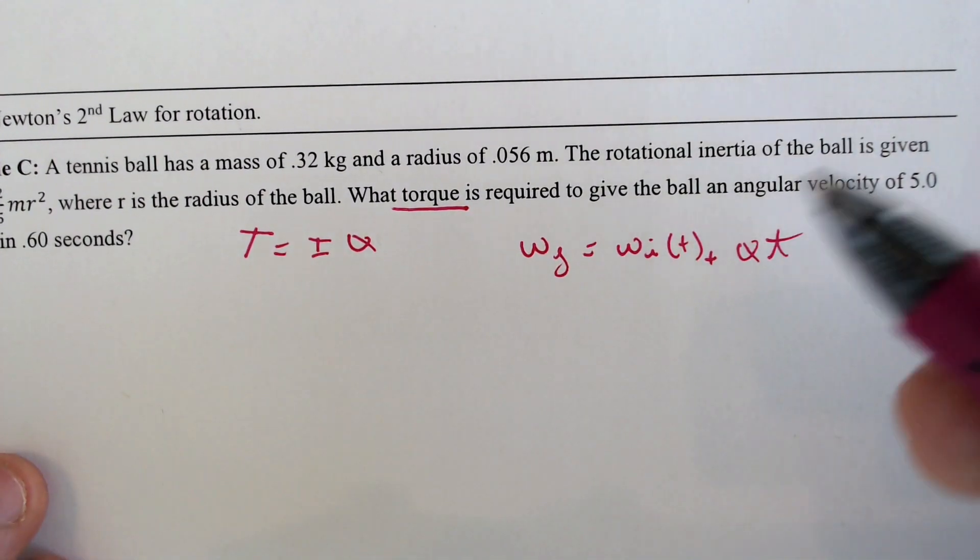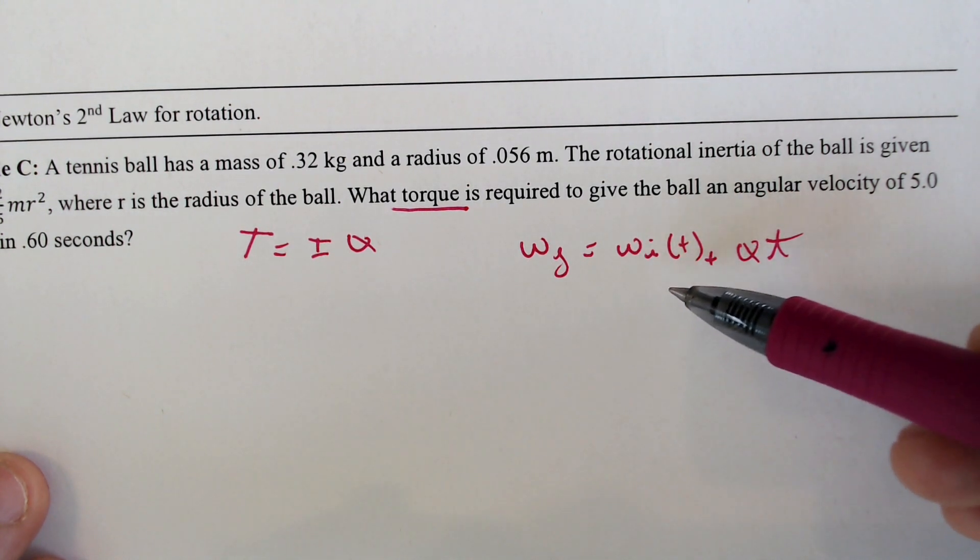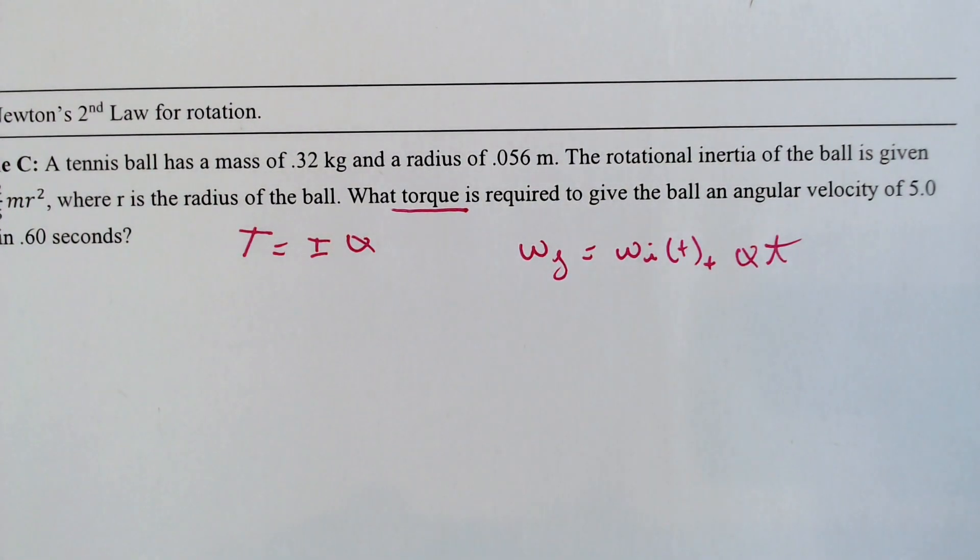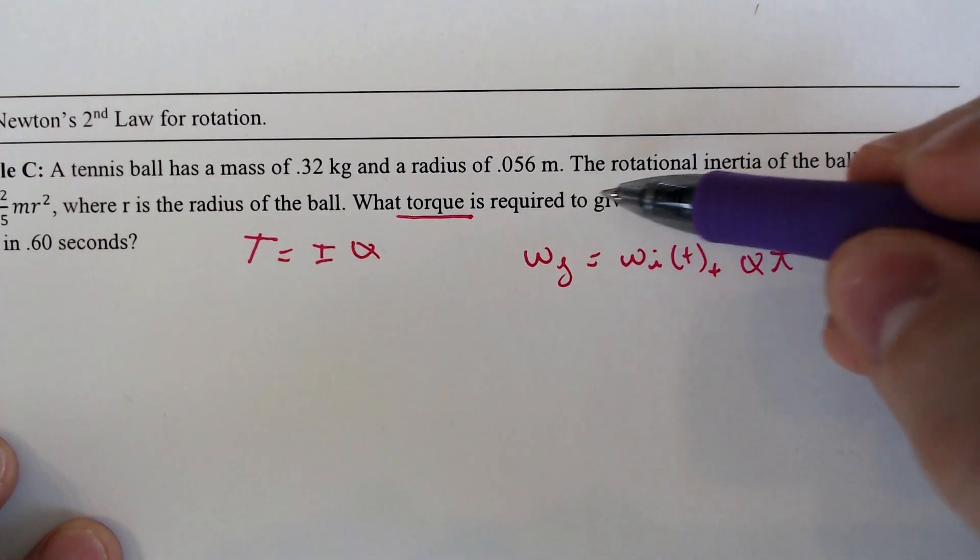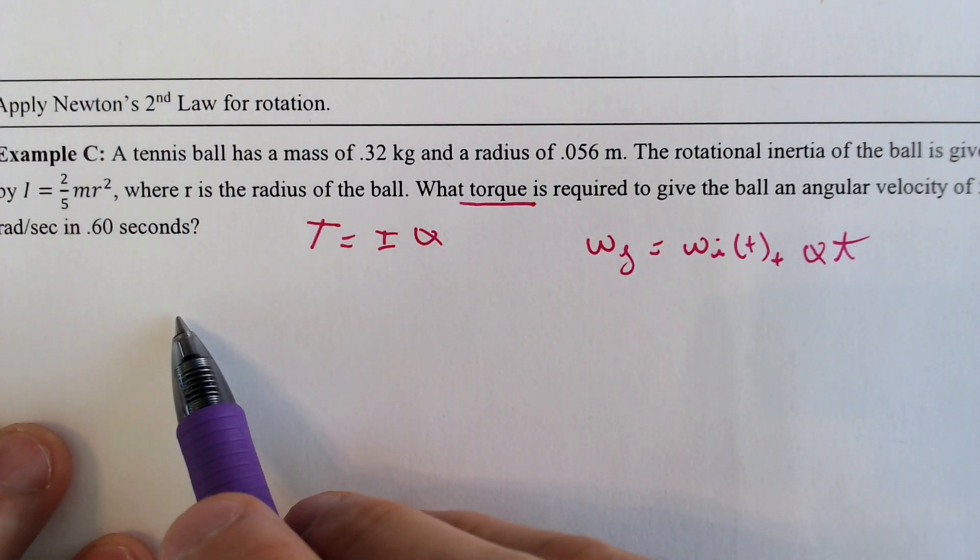With this formula that I've written, your angular velocity final will equal your angular velocity initial plus the angular acceleration times time. So if we figure out all of this, what do we know in the beginning? Give the ball an angular velocity of five radians per second in six seconds. So that would mean that we would know our final angular velocity.